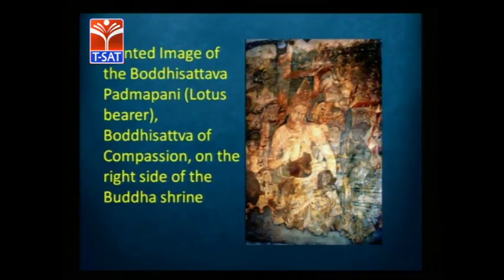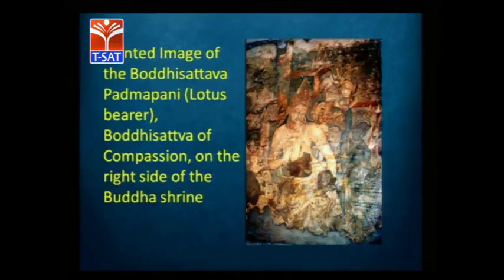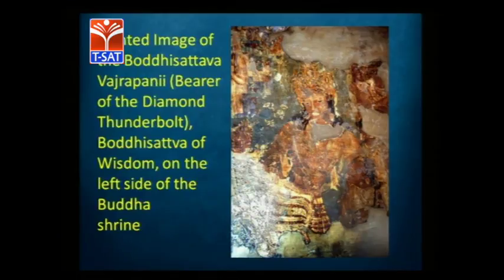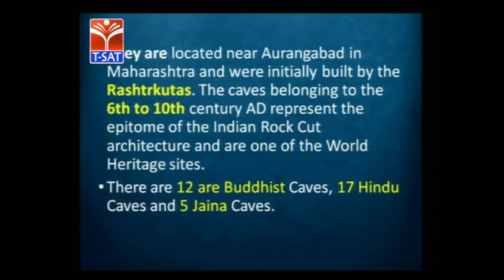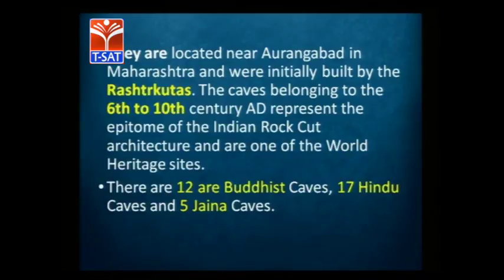There are very important paintings from Ajanta — the Jataka stories, the life stories of the Buddha. Two important images are the Padmapani Bodhisattva — the lotus bearer — and the Vajrapani Bodhisattva — the thunderbolt bearer. The Ellora caves were built by the Rashtrakutas, between the 6th and 10th century AD — this is later.